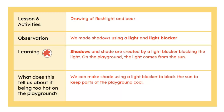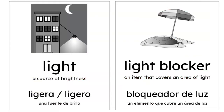From the discussion, students should understand that shadows and shade are created by a light blocker blocking the light. On the playground, the light comes from the sun. During the discussion, you can post the light vocabulary card and the light blocker vocabulary card.